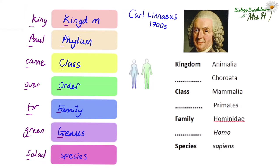Let's look at the human classification. You can see we belong to the animal kingdom, Animalia. We can now easily fill in the other taxonomic groups: kingdom, phylum, class, order, family, genus, species. You don't have to remember the names of Chordata, Mammalia, Primates etc., but you do need to know the order of the taxonomic groups.